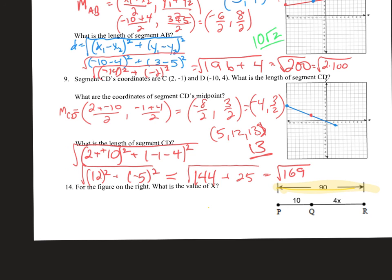Last one: the whole angle is 90 degrees, the parts are 10 and 4x. Part plus part equals whole, so 10 plus 4x equals 90. That's algebra, and you guys all know algebra.